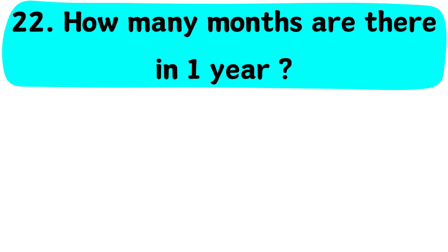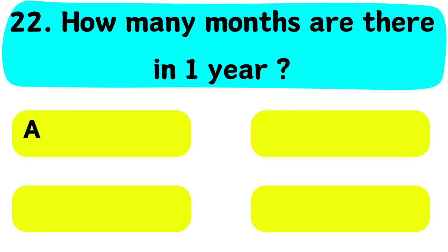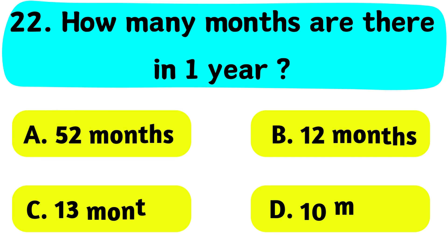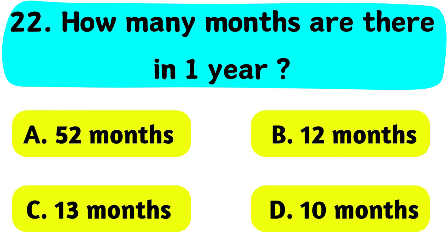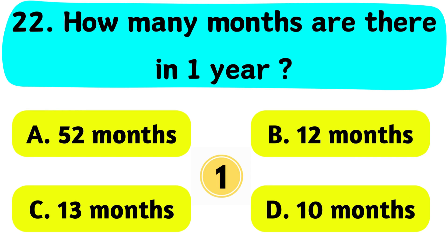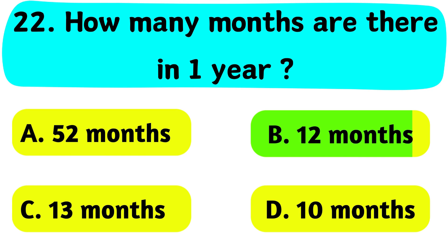Question No. 22. How many months are there in one year? A. 52 months, B. 12 months, C. 13 months, D. 10 months. The correct answer is Option B. 12 months.